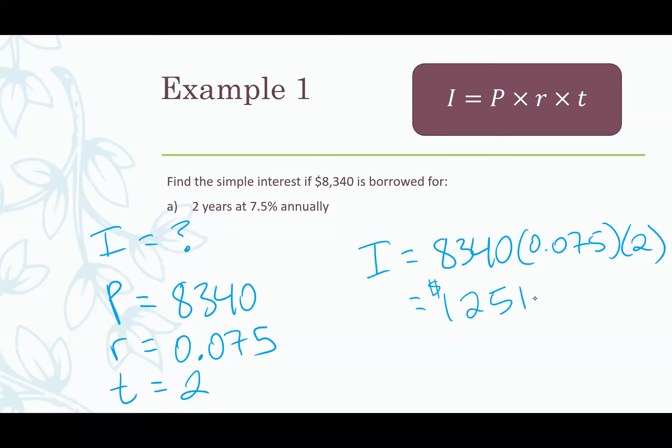Once we have this information we can plug it into our formula. So I equals all those things multiplied together. Put it into your calculator. You get $1,251. So that's how much interest you would have to pay if you borrowed that much money for two years at 7.5%. You would not only have to pay the original amount back, you'd also have to pay that $1,200 as interest.